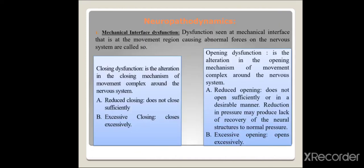Neuropathodynamics includes five categories: mechanical interface dysfunction, patho-anatomical dysfunction, patho-physiological dysfunction, neural dysfunction, and innervated tissue dysfunction. Mechanical interface dysfunction refers to dysfunction at the NMJ — the movement region causing abnormal forces on the nervous system. This includes closing dysfunction and opening dysfunction. Closing dysfunction is an alteration in the closing mechanism, either reduced closing causing decreased nerve tension, or excessive closing causing highly increased nerve tension.